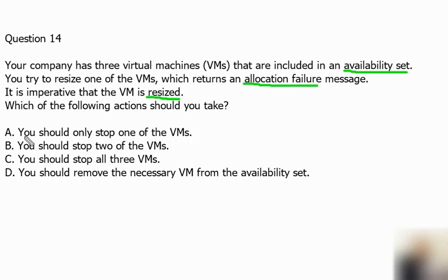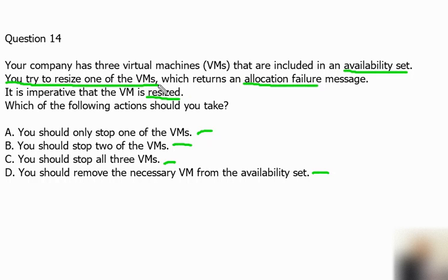The options available are: A — stop only one of the virtual machines; B — stop two of the VMs; C — stop all three VMs; D — remove the necessary VM from the availability set. Since we want to resize a VM that is part of an availability set, we have to stop all the virtual machines in the availability set before changing the size of any virtual machine.